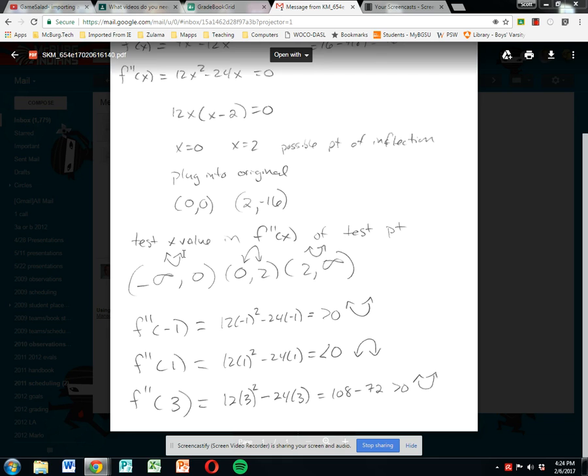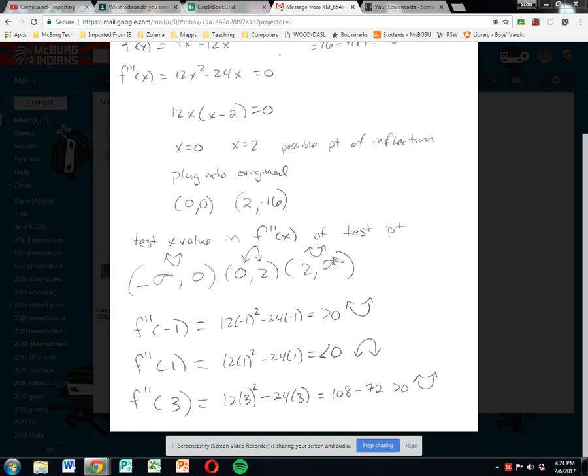So I have concave up, turning to concave down, turning to concave up again. Are they all points of inflection? Yes. Zero, zero, changed from concave up to concave down. And two negative 16, changed from concave down to concave up. So yes, both were changes in concavity, therefore both of these points are points of inflection.